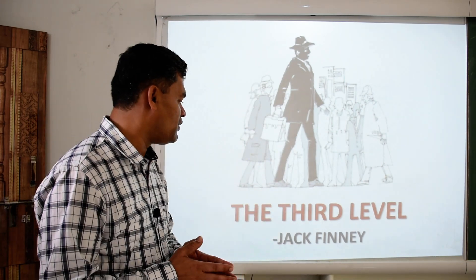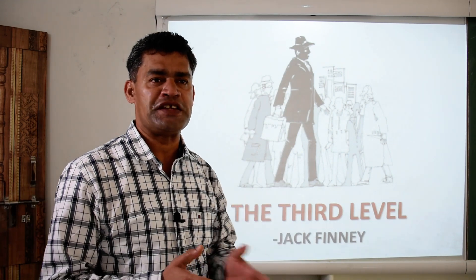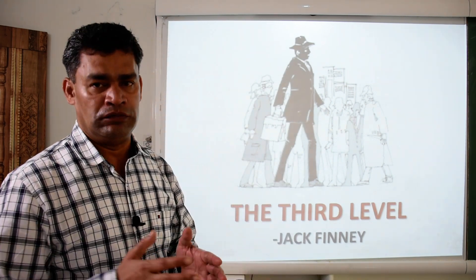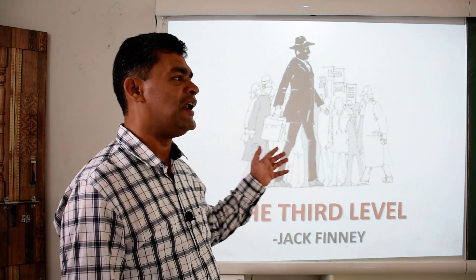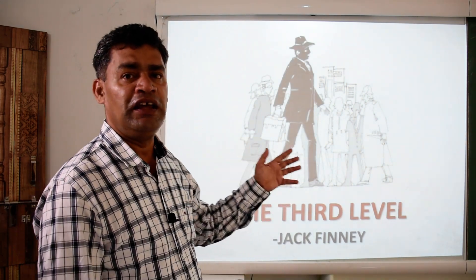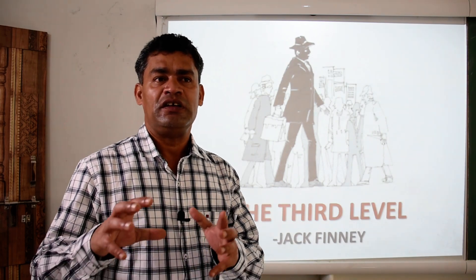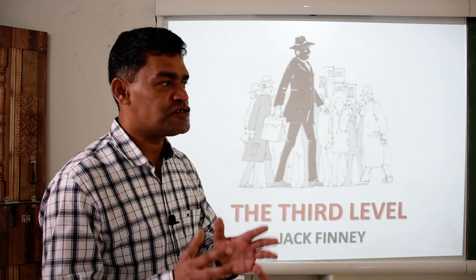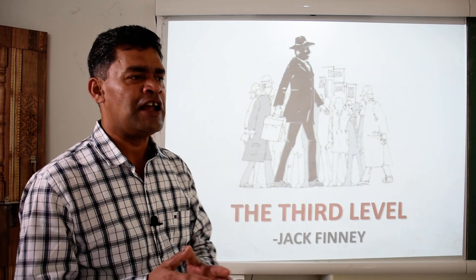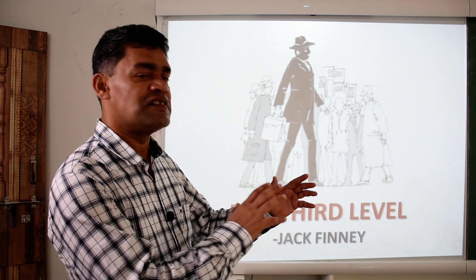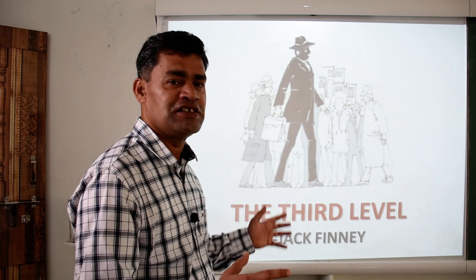This lesson, 'The Third Level,' is something similar to what I just described. The main hero, Charlie, deliberately chooses a situation which does not in reality exist. He wants to avoid the unpleasant experience of his life and is choosing another situation in which he feels quite comfortable. That is what the whole lesson is all about.